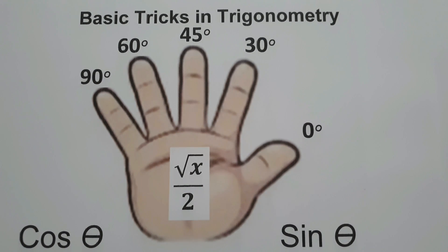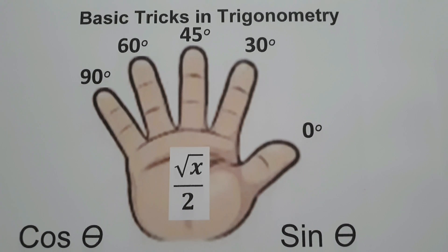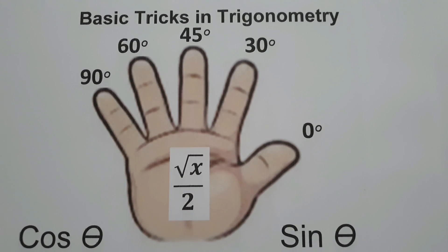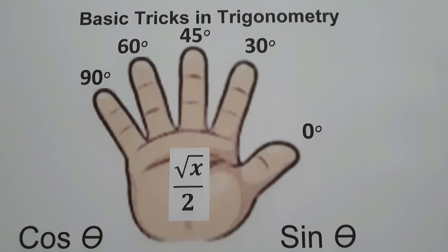To find the value of the six trigonometric functions with special angles, we simply count the number of fingers between the given angle and the given trigonometric function. So let's start and evaluate trigonometric functions with special angles.